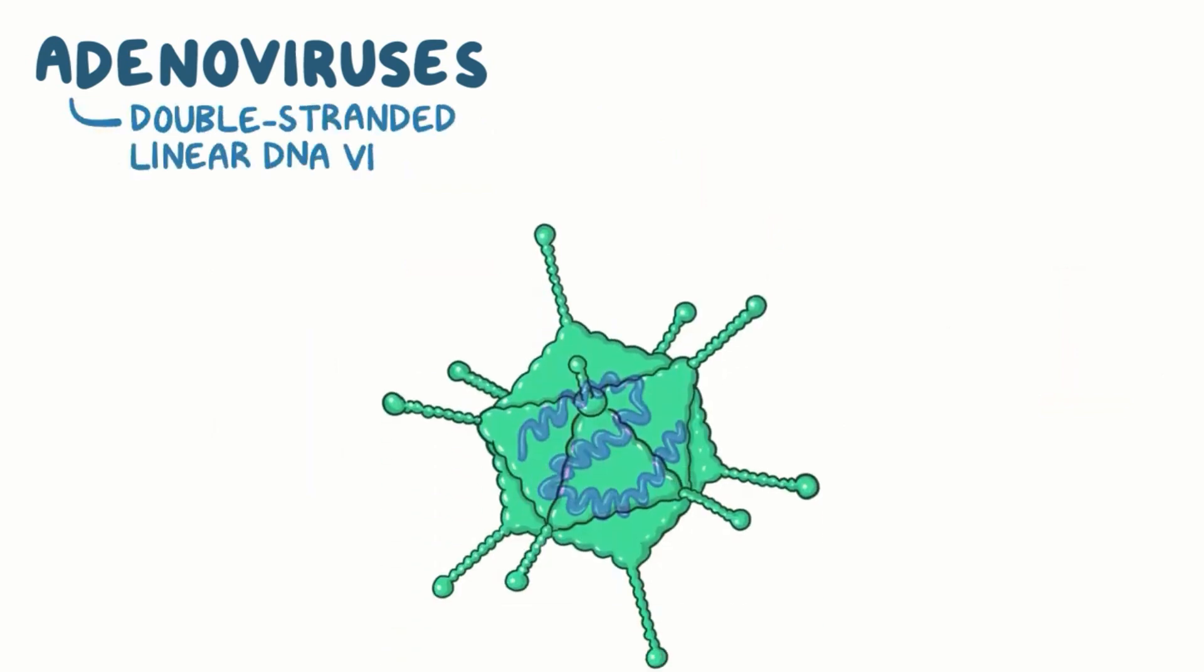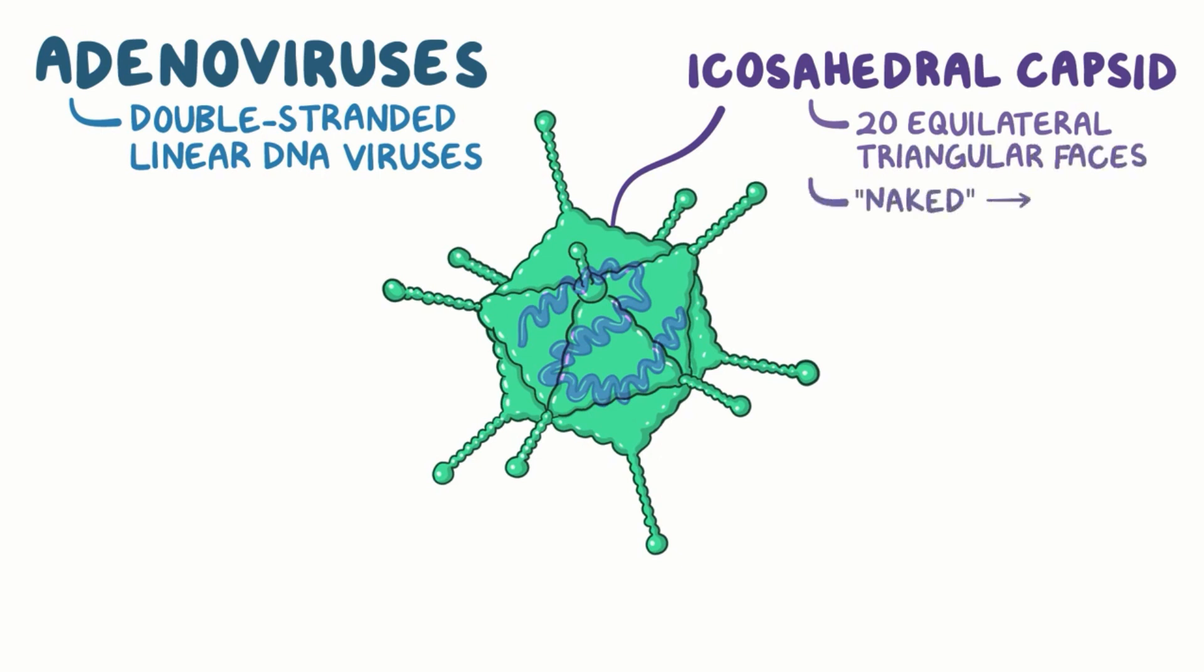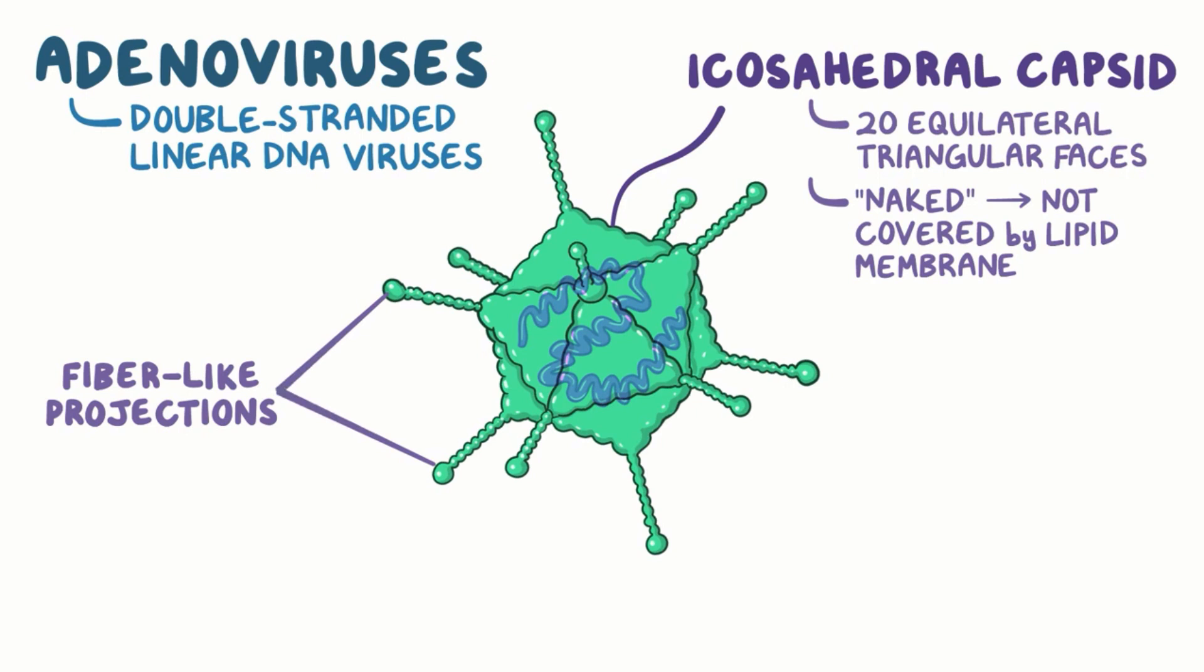Adenoviruses are double-stranded, linear DNA viruses surrounded by an icosahedral capsid, which is a spherical protein shell made up of 20 equilateral triangular faces. They're naked because the capsid isn't covered by a lipid membrane. Their capsid is unique among viruses because it has fiber-like projections from each of the 12 vertices of the shell.